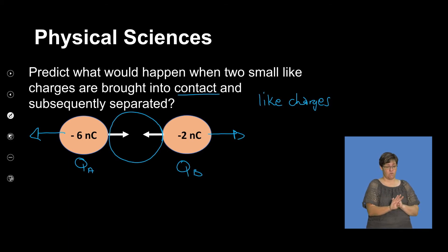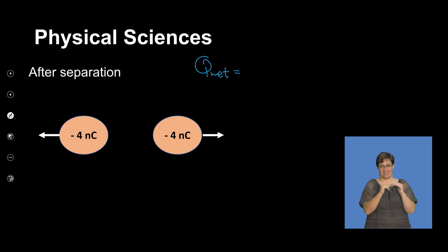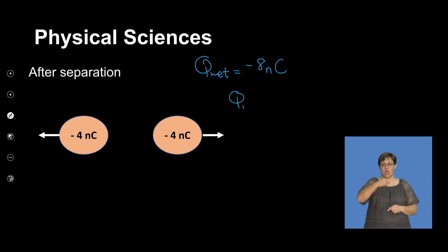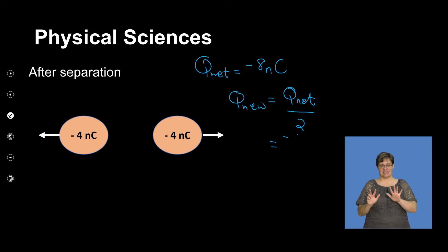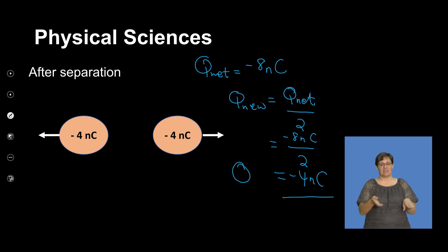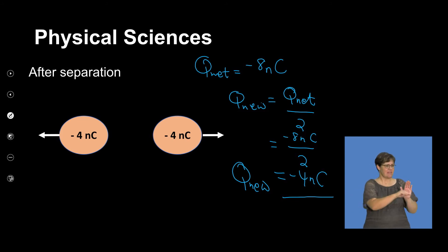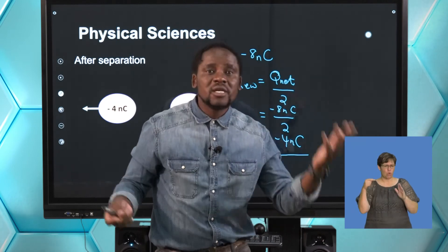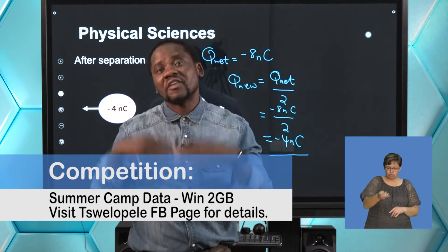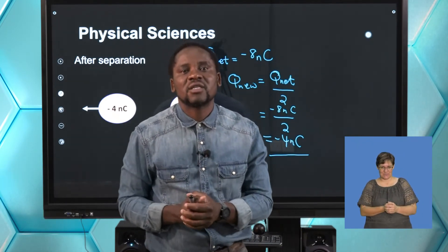We have a scenario with negative 6 nanocoulombs and negative 2 nanocoulombs. Q_net equals negative 8 nanocoulombs. The new charge: Q_new equals Q_net divided by 2, giving negative 8 nanocoulombs divided by 2, equaling negative 4 nanocoulombs. Each one now carries negative 4 nanocoulombs. The force of repulsion still exists because they remain like charges. We'll take the discussion further after the break to examine how many electrons were lost, gained, and transferred.